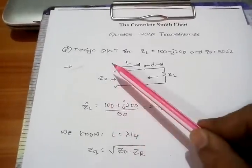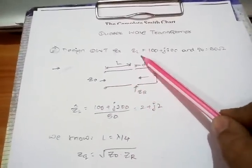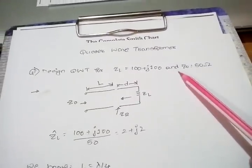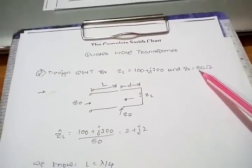We need to design a quarter wave transformer for the load impedance of 100 plus j100 and the characteristic impedance of 50.